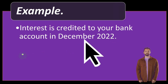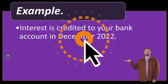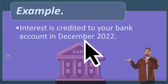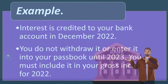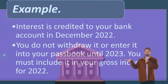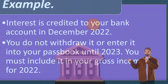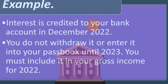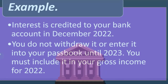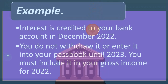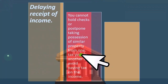Example: interest is credited to your bank account on December 2022. You do not withdraw it or enter it into your passbook until 2023. You must include it in your gross income for 2022 because you had the capacity to access it.